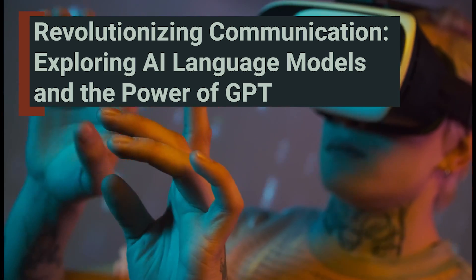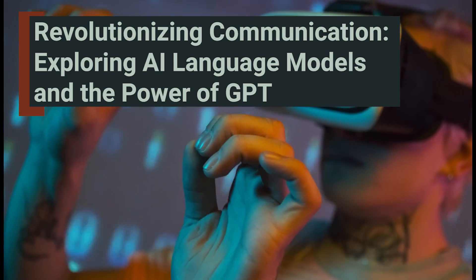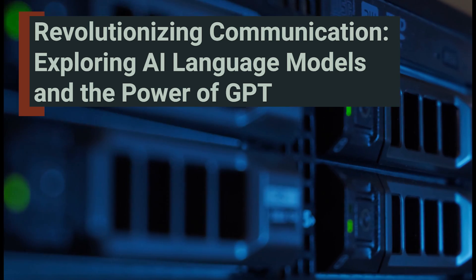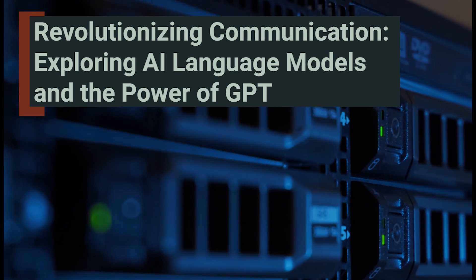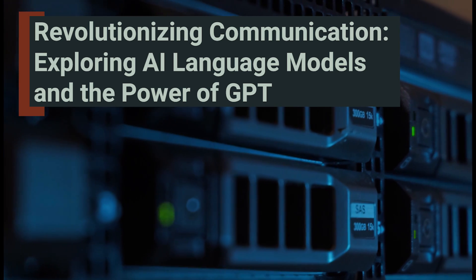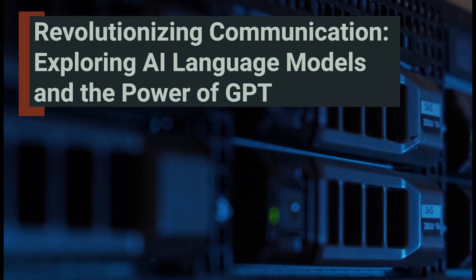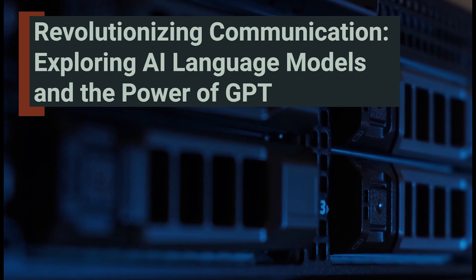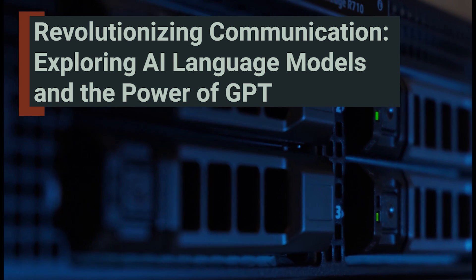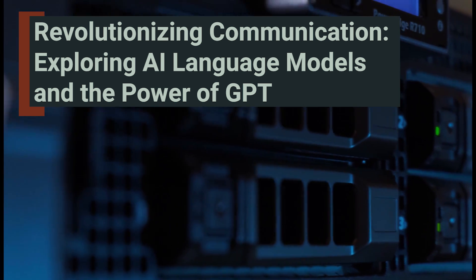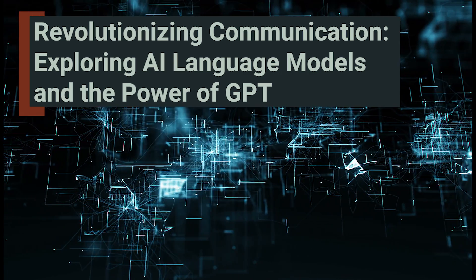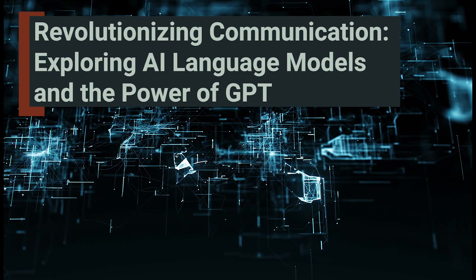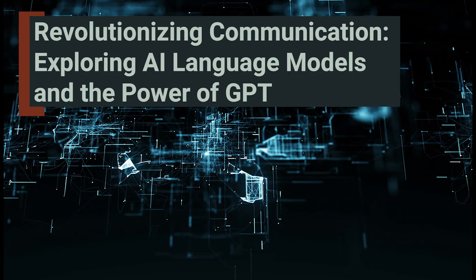At the heart of these AI language models are neural networks, which are complex mathematical models that can learn to recognize patterns and relationships in data. Specifically, the neural network used in many AI language models is called a transformer network. This type of network is designed for sequence-to-sequence learning tasks, such as machine translation and language modeling.